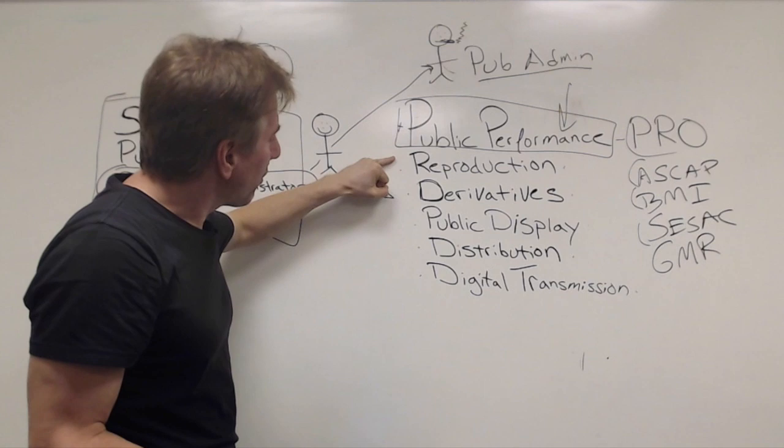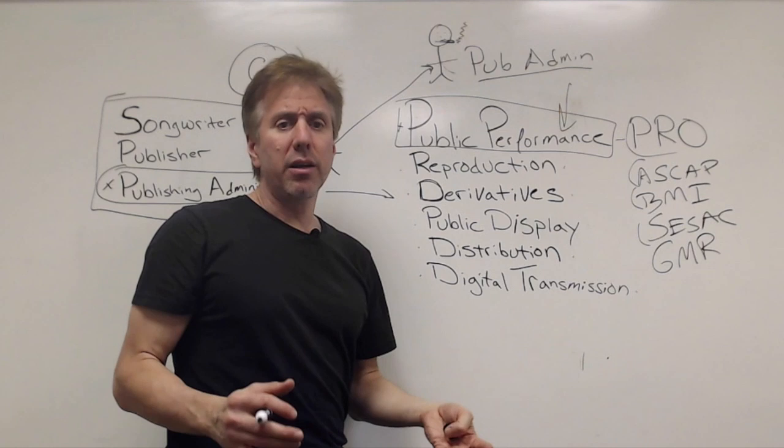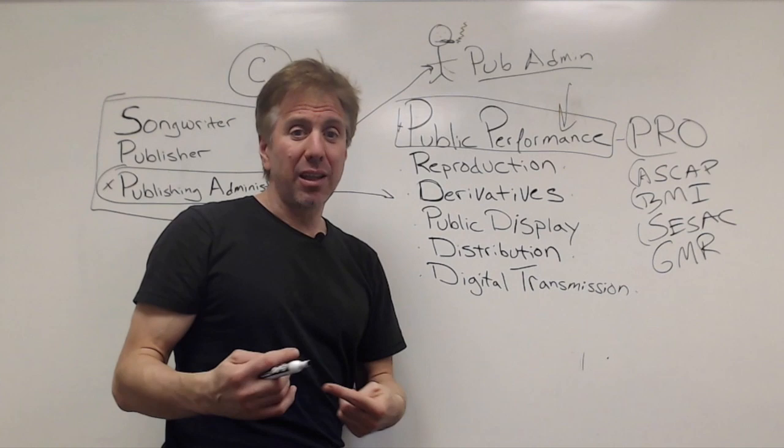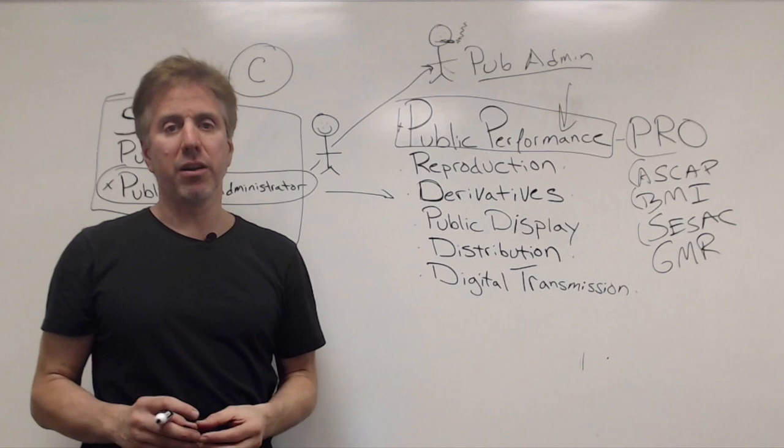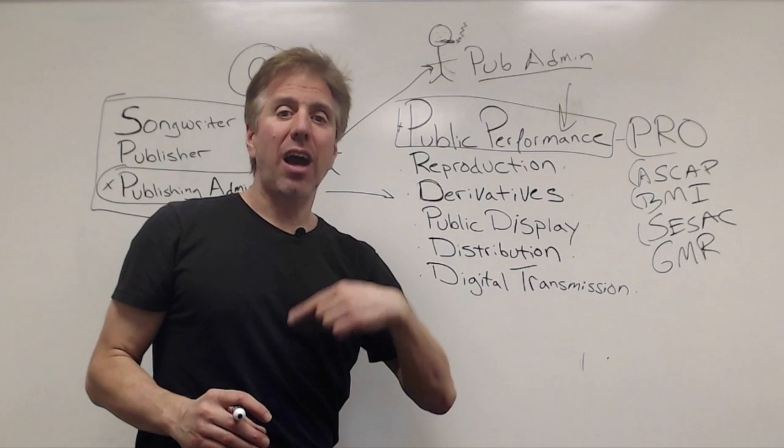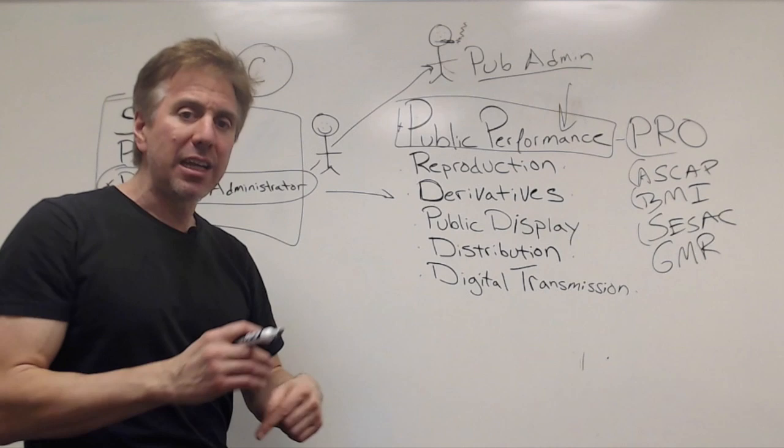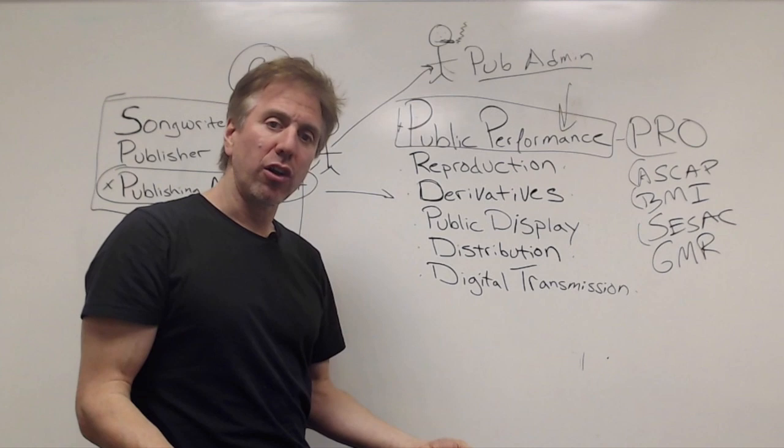So that's public performance. The right of reproduction, again, I'm doing truncated versions of this, is every time your lyric and melody, your composition gets legally reproduced, there needs to be a license and there's typically a payment. So what is a reproduction? A reproduction is a CD gets manufactured, a piece of vinyl gets manufactured, something physical gets manufactured. Every time that happens, it's considered a reproduction. And the royalties that are paid each time there's a reproduction are oddly enough called mechanical royalties.